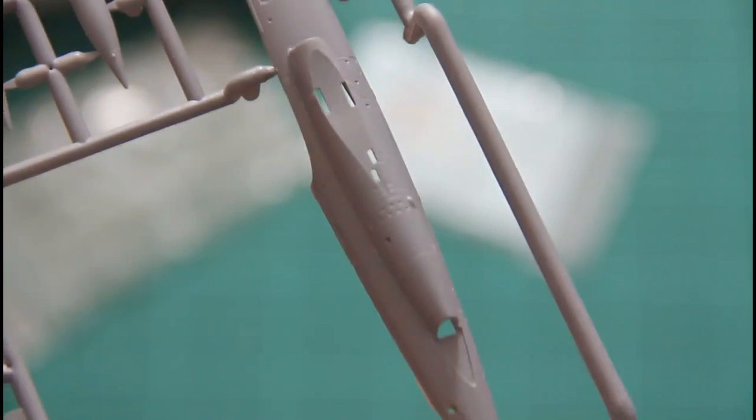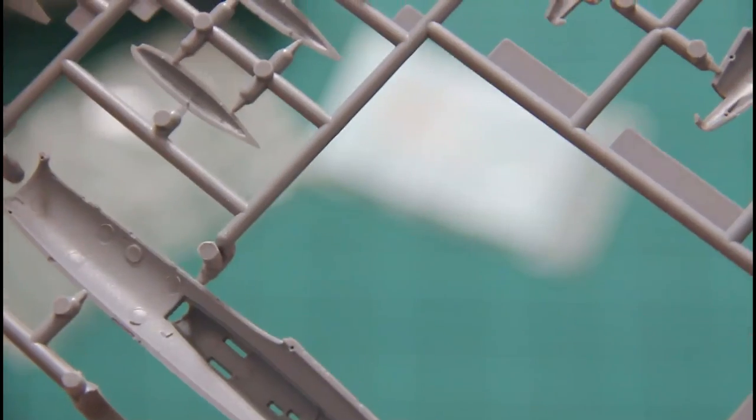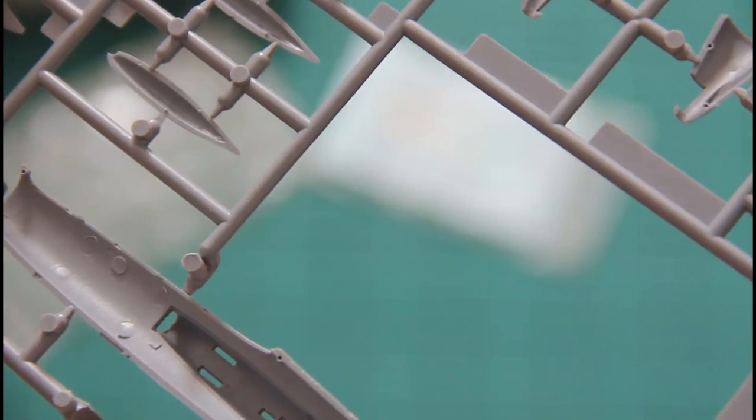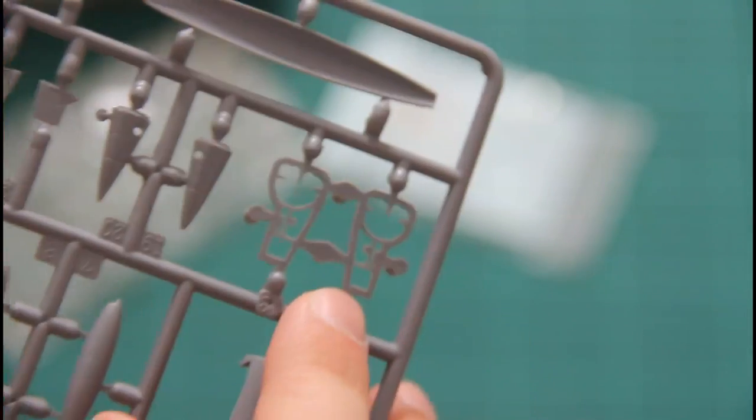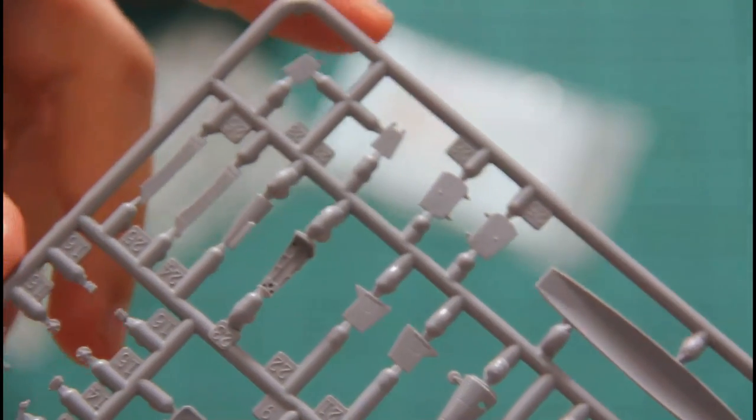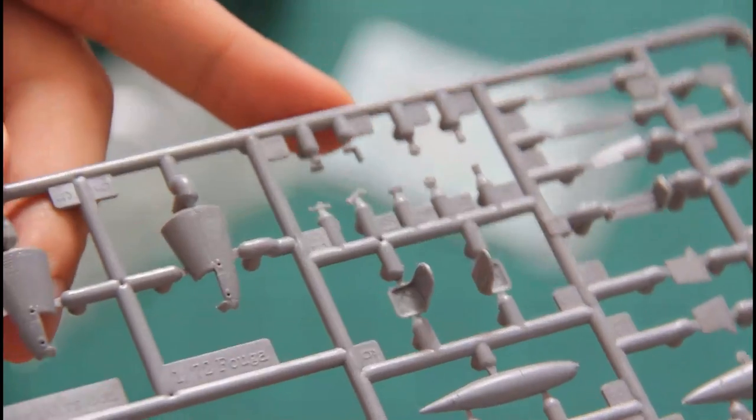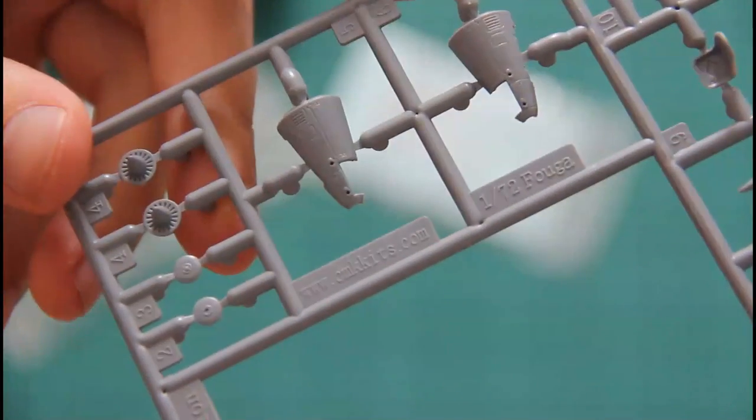And the last sprue. This one contains the right fuselage half with the same detailing as the previous one. Position pins are present, so it will be easy to align them together. Here you can see separate wheel well parts, and also some landing gear doors, other minor elements, seats which are molded as one piece, and some air intake parts.